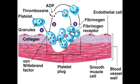Von Willebrand factor is also inside the endothelial cell, but it is not an anti-aggregation factor. Additionally, inside platelets there is also von Willebrand factor and fibrinogen.